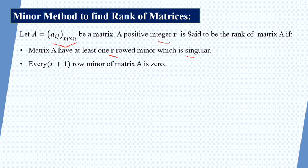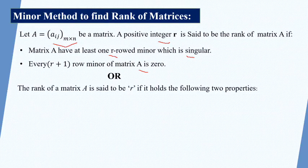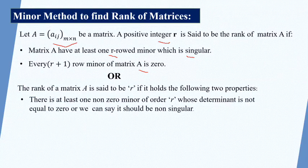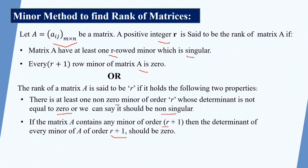Every r+1 order minor of matrix A is zero. In other words, the rank of matrix A is r if: one, there is at least one non-zero minor of order r whose determinant is not equal to zero, making it non-singular; and two, if matrix A contains any minor of order r+1, then the determinant of every such minor must be zero.